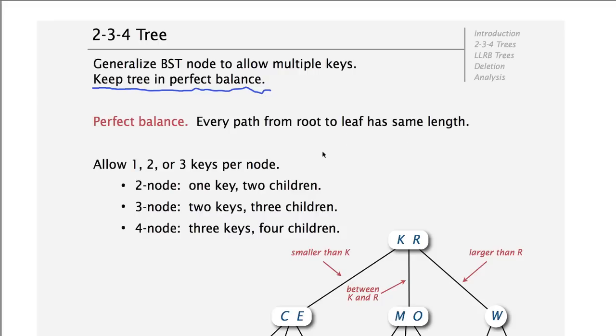We allow 1, 2, or 3 keys in each node. And in a 2-node, we have one key and two children. In a 3-node, two keys and three children. In the 4-node, three keys and four children. And we can't have more than three keys in a node.